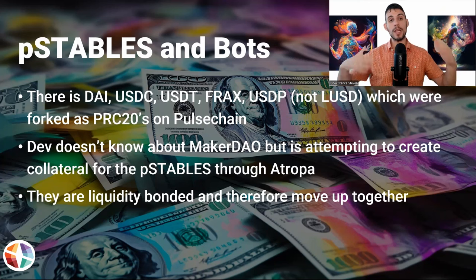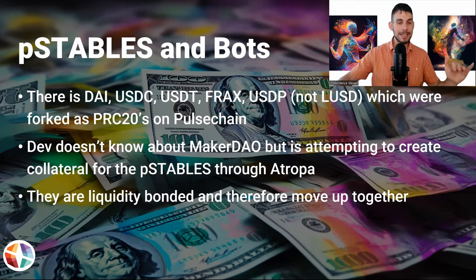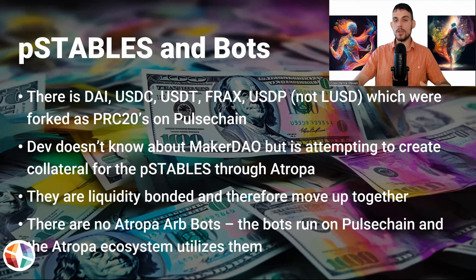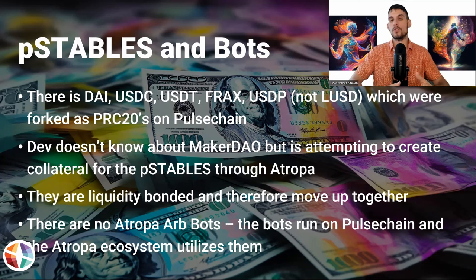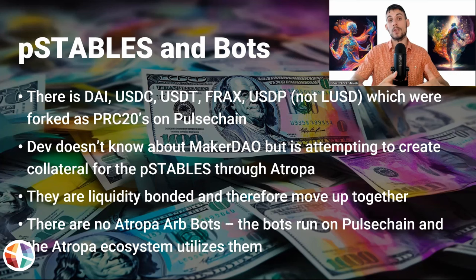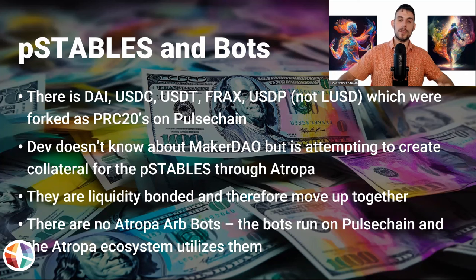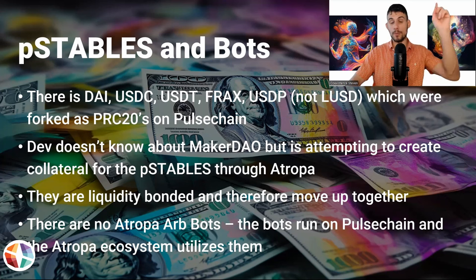There are no Atropa-specific R-bots; the bots just run on Pulse Chain. We don't know who runs those R-bots, but the Atropa ecosystem utilizes them. It also utilizes the fact that Pulse Chain itself is extremely cheap, so you can do liquidity bonding and liquidity pools and it basically utilizes the power of the bots to propel the whole ecosystem. I have plenty of videos on the P-stables as well if you want to get into that.